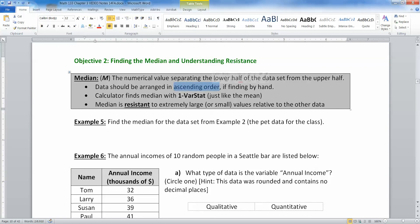If you're going to find it by hand, you'd have to put your data in order from lowest to highest. Luckily for you, you don't really have to do this because computers and calculators and Excel can all do this for you. Your calculator finds the median when it does the one variable statistics, just like when it found the mean. Keep in mind that the median is resistant to extremely large or small values relative to the other data. Those are called outliers.